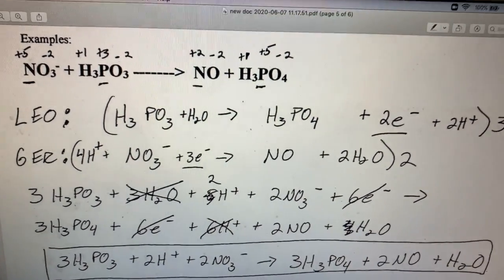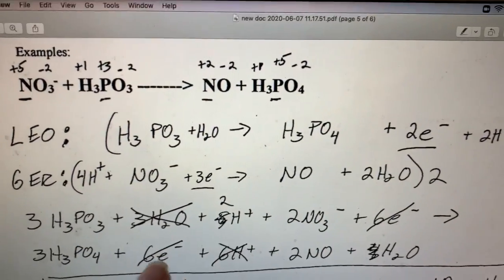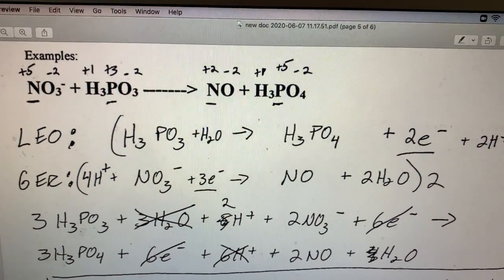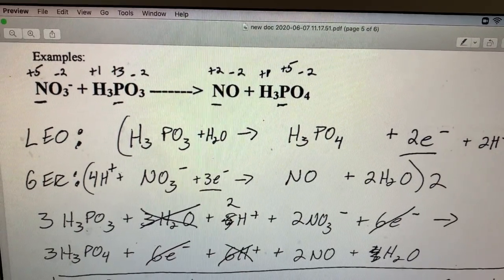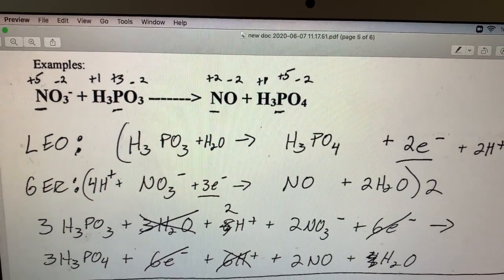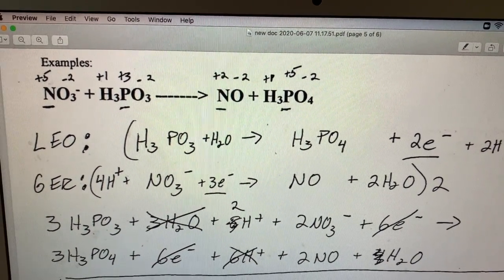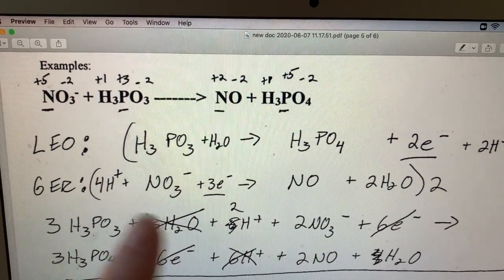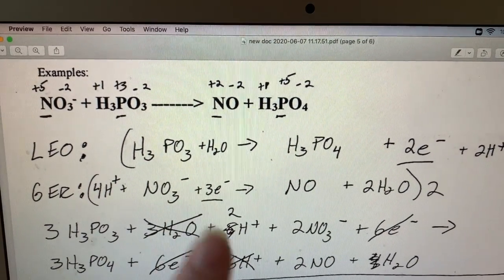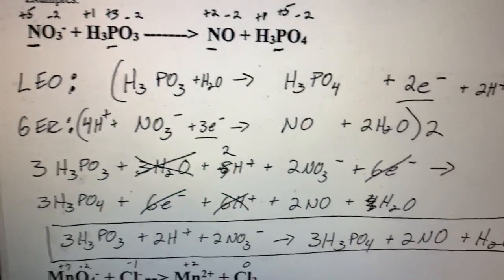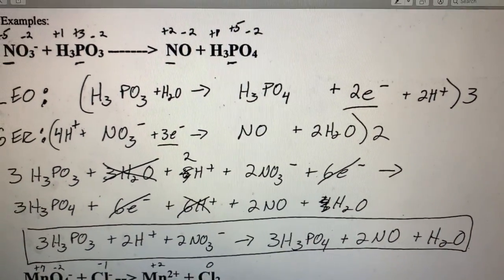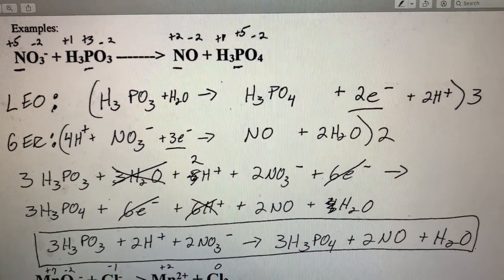When you rewrite that, you're going to notice you're going to be able to cancel out some things. The number one, most important thing that should cancel out is your number of electrons should cancel out completely. You should never have electrons written in a redox reaction. In this case, some of my waters canceled out, some of my hydrogens canceled out, and then you are left with your final answer.